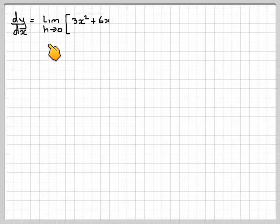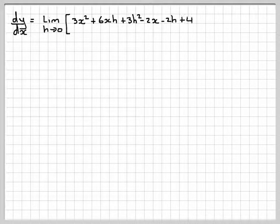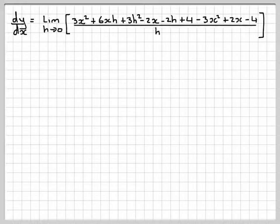So dy/dx will be the limit as h goes to 0 of all of that over h. Now we can see here, there is a 3x squared and a minus 3x squared, so they cancel out. We have got minus 2x and plus 2x here. A lot of things are going to cancel out. We've got a 4 and a minus 4 here, and that can cancel out.